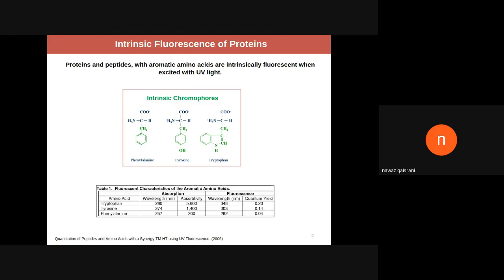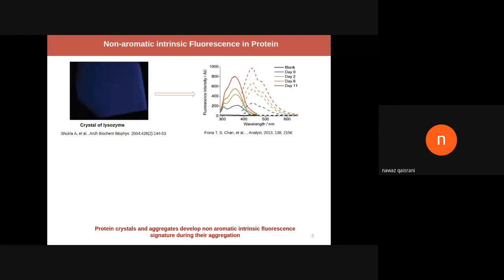These aromatic amino acids have a tendency to absorb in near UV and emit in the visible. This picture was true until 2004.